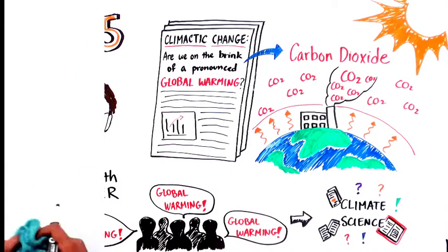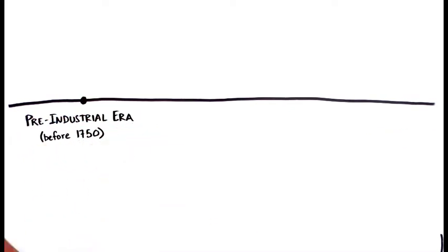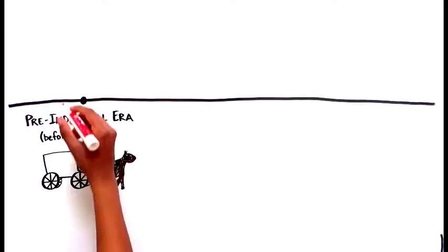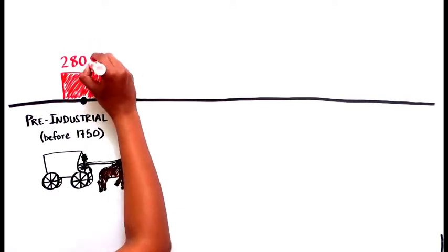Over time, Broker's prediction has proven to be correct. During the pre-industrial era, before humans started burning large amounts of fossil fuels, the concentration of atmospheric carbon dioxide was about 280 parts per million.